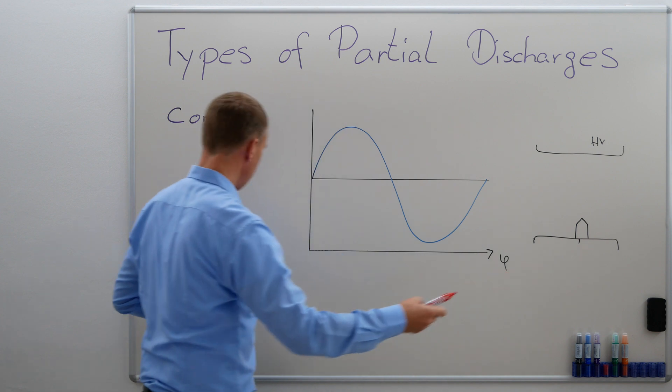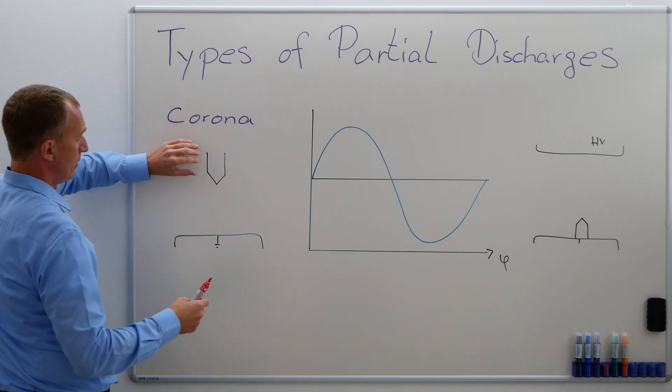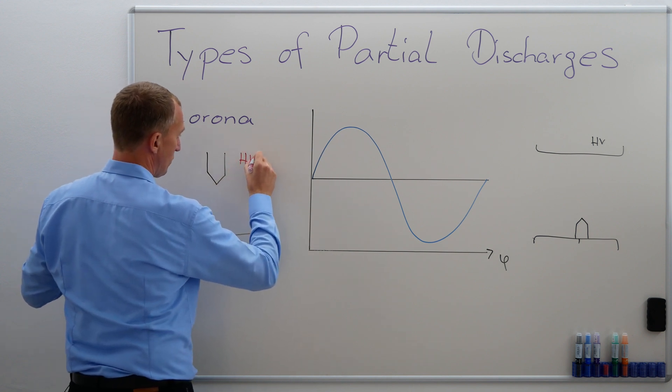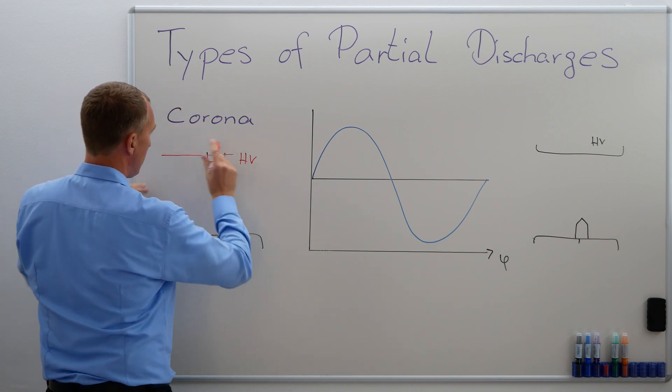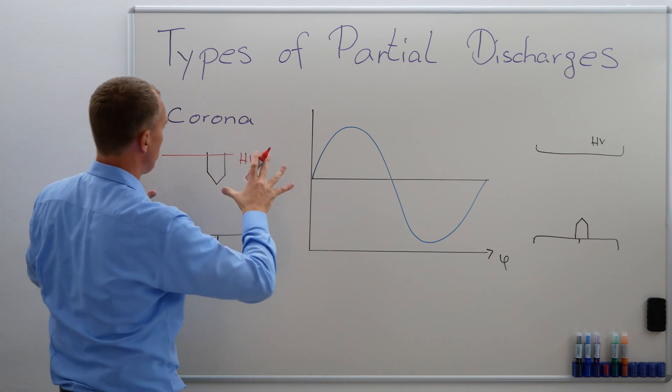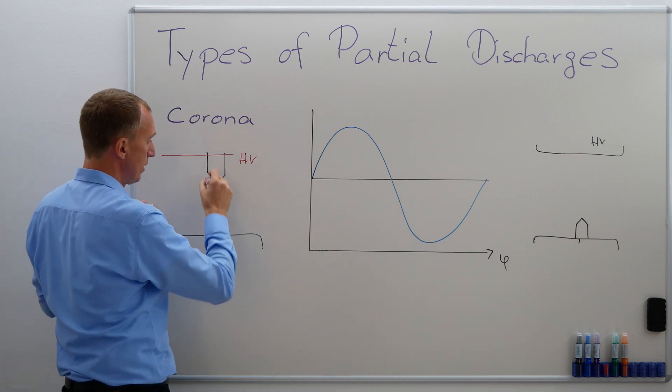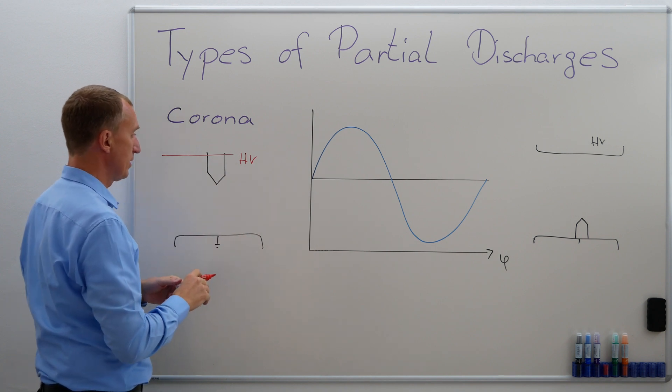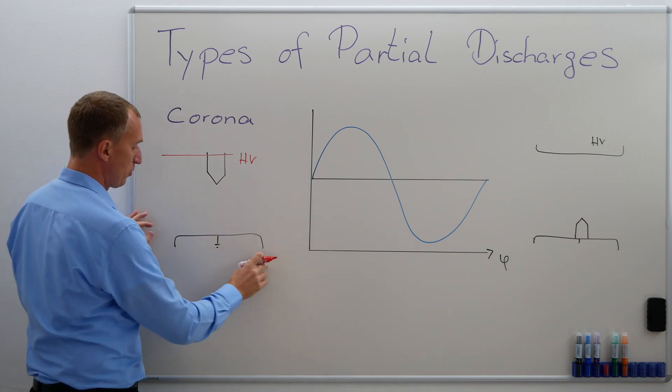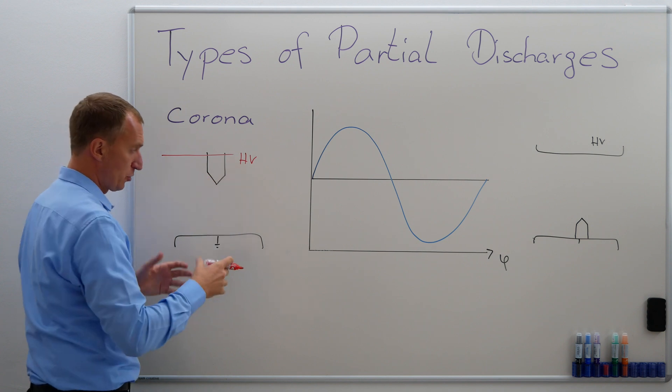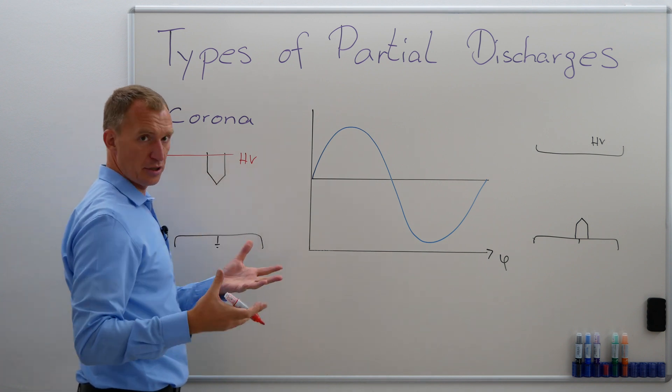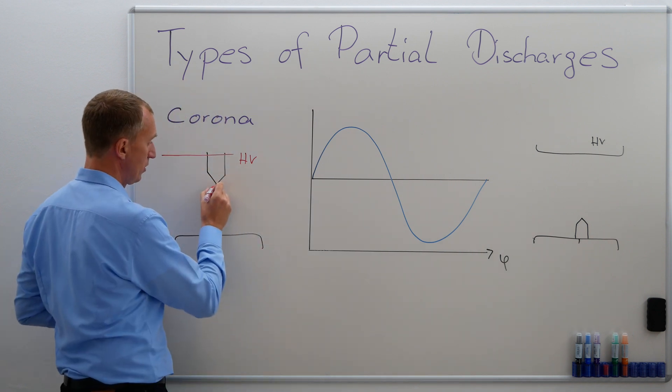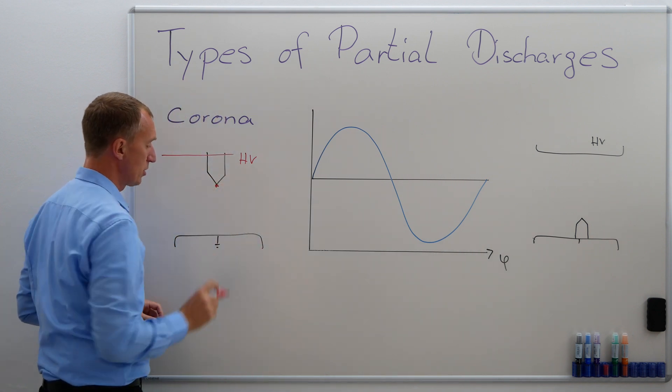First of all, let's say that I'm having a pointy or a tippy high-voltage conductor. And this would be HV. Obviously, usually I have many things on high-voltage, right? But there's one little tippy part like a screw or like a bolt or like a piece of conducting tape or whatever. And I have my ground plate. And if I'm increasing the voltage and I'm reaching a voltage which is above partial discharge inception voltage, I'm going to have partial discharges.